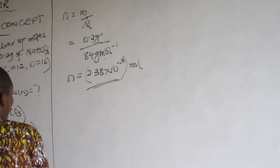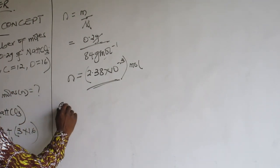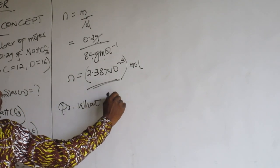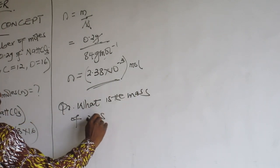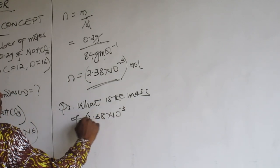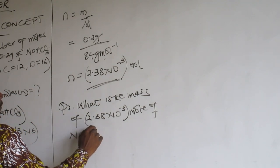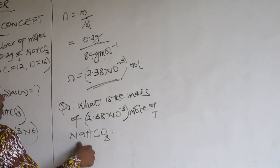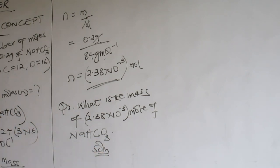Now what if you are asked to determine the mass from this same question? What is the mass of 2.38×10⁻³ moles of sodium hydrogen carbonate? So they will give you this. So what is the mass? Do you understand?